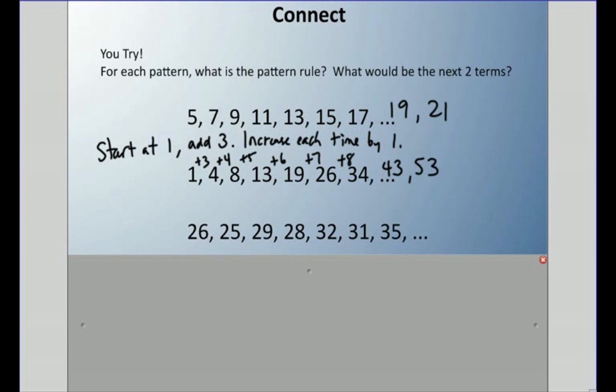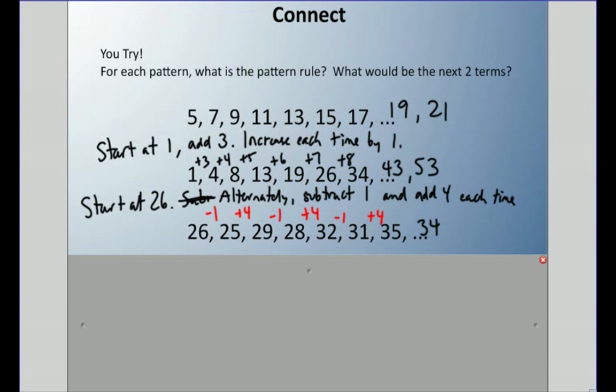Here's another one. 26, 25, 29, 28, 32, 31, 35. You might notice it's not an increasing pattern this time. So again, what's the pattern rule? What would be the next two terms? Well, the pattern rule is definitely start at 26. I'm going to write that down. Start at 26. Now, this one goes down one, and then it goes up four. It goes down one. It's going up four, down one. So start at 26. Subtract, actually, we could say alternately. Alternately subtract one and add four each time. So we ended off with a plus four. We got to subtract one. So the next term would be 34. And we're adding four. So 38.